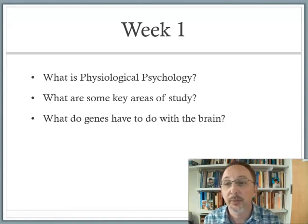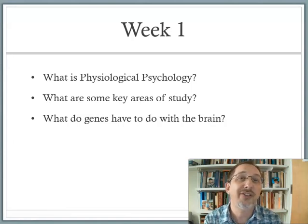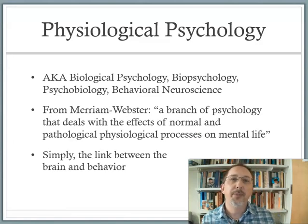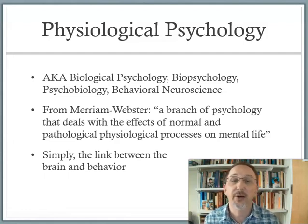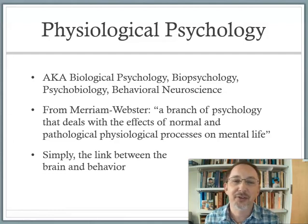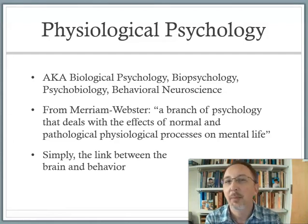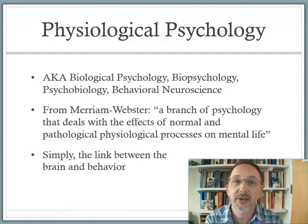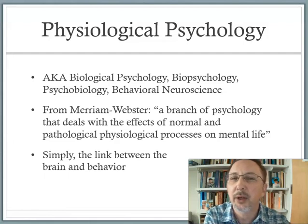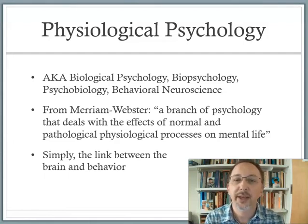In understanding neurons, we need to understand how neurons can change. And understanding how neurons change means understanding genes. Physiological psychology has other names — biopsych, psychobio, behavioral neuroscience — whatever you think makes it sound the most interesting. The definition is a branch of psychology that deals with the effects of normal and pathological physiological processes on mental life. The idea is your mind and your brain are somehow connected — your mind is your sense of self, of focus, of attention, but it's all being produced in some way by the physical brain. So the link between the brain and behavior.